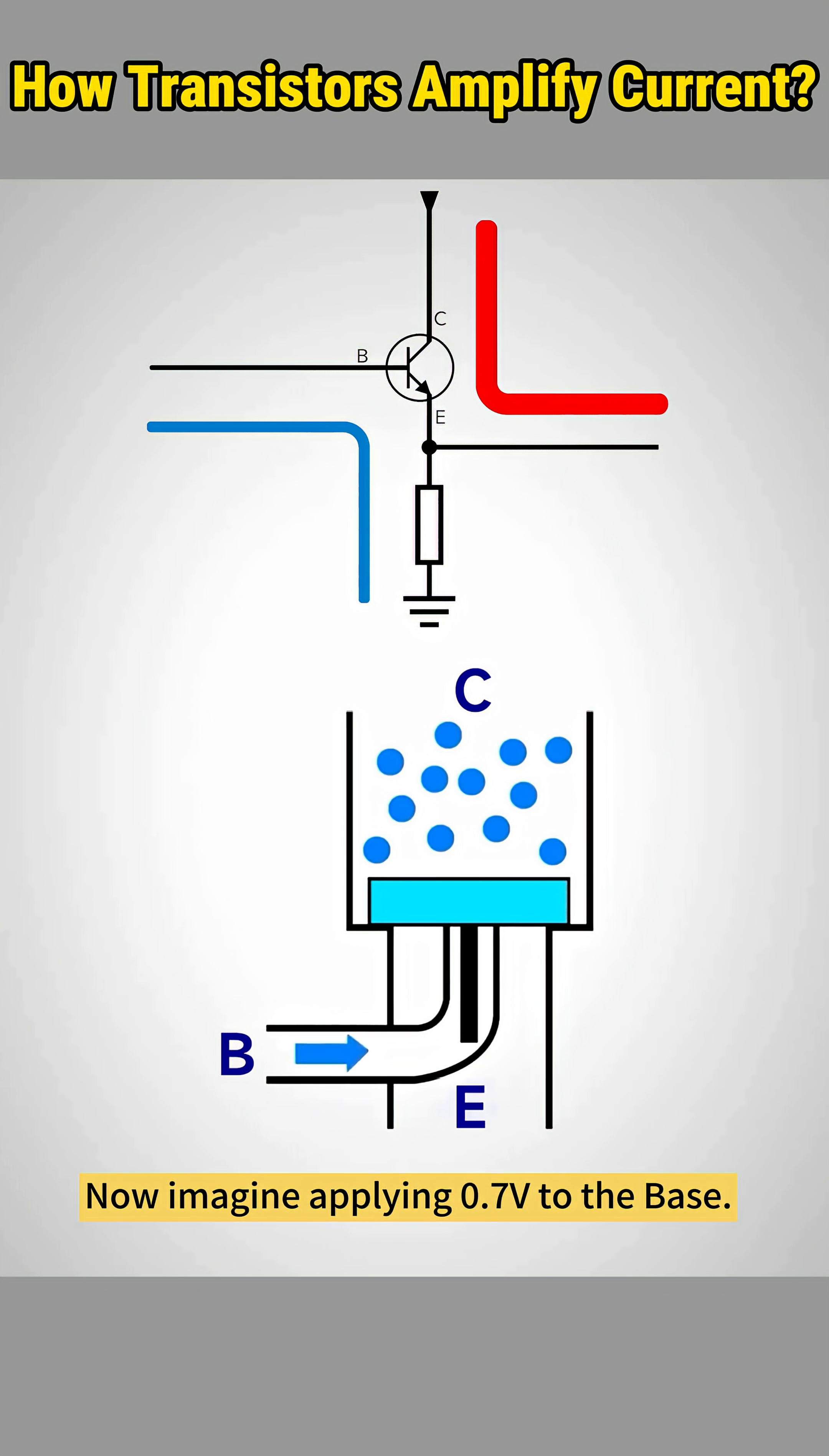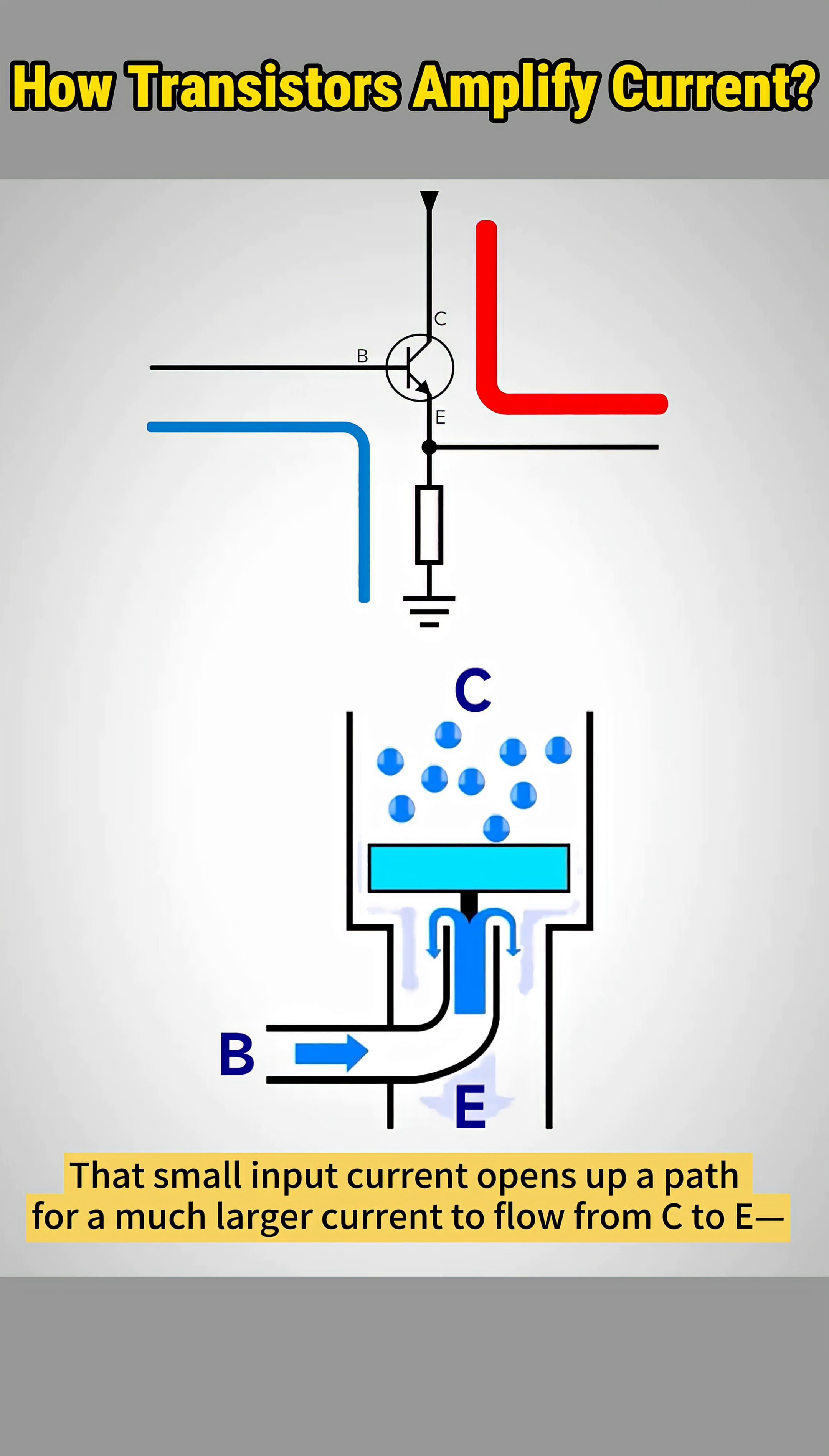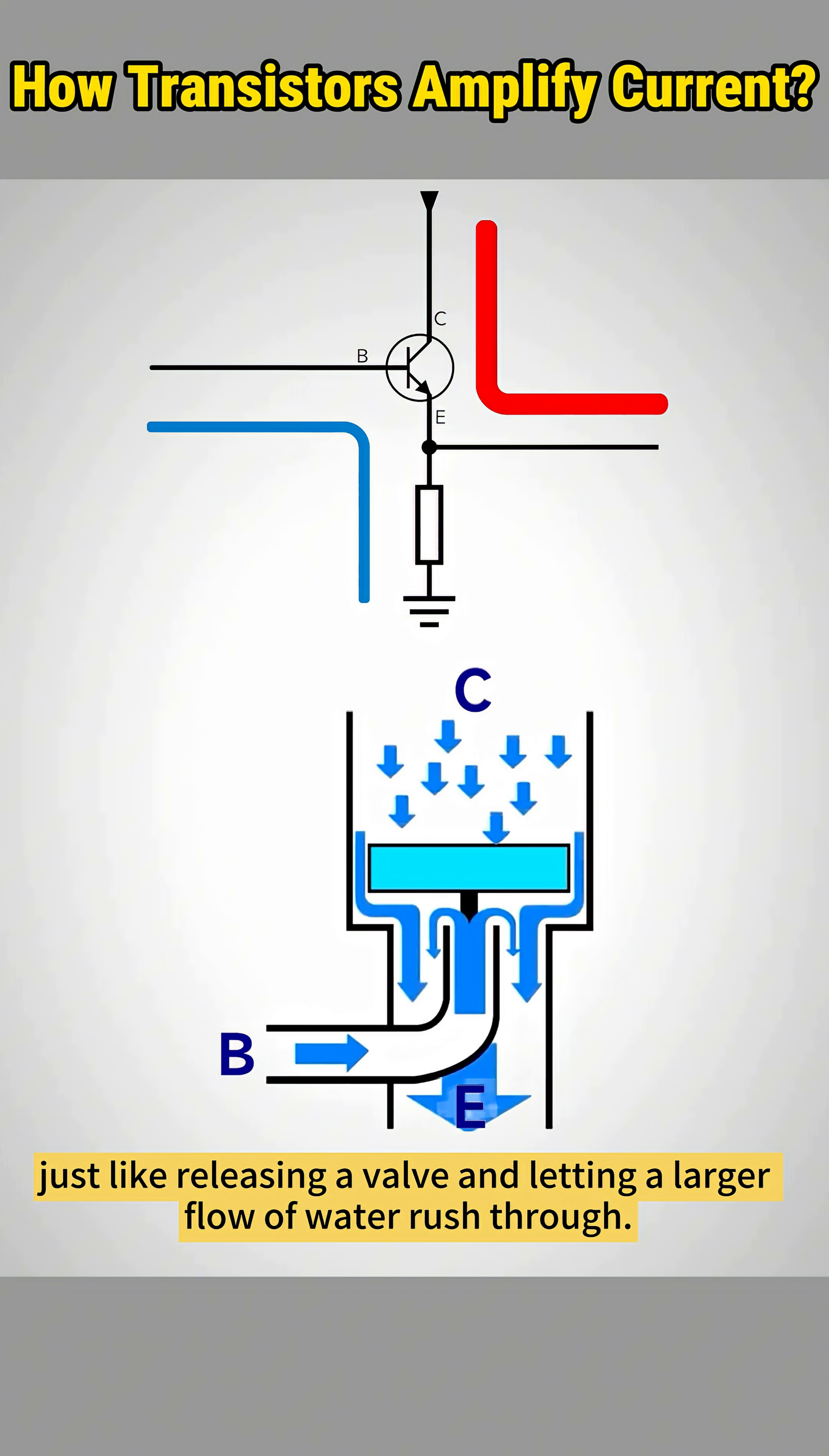Now imagine applying 0.7 volts to the base. A tiny control current flows from B to E like pushing water into a tiny channel. That small input current opens up a path for a much larger current to flow from C to E. Just like releasing a valve and letting a larger flow of water rush through.